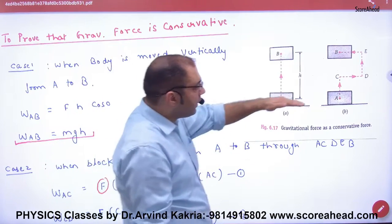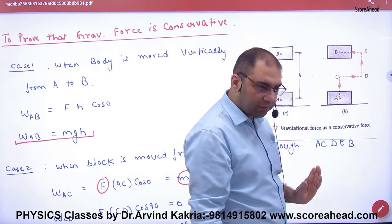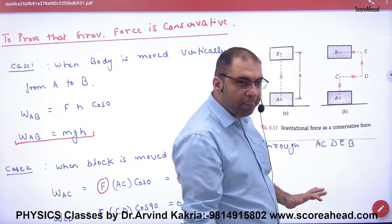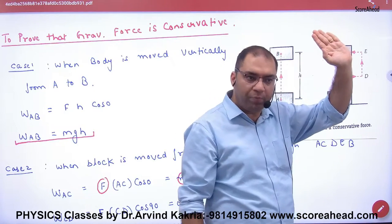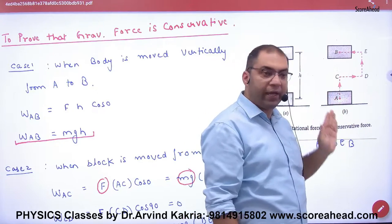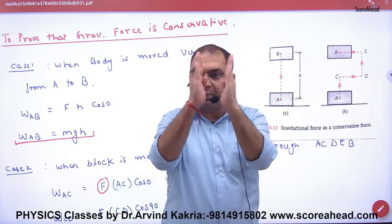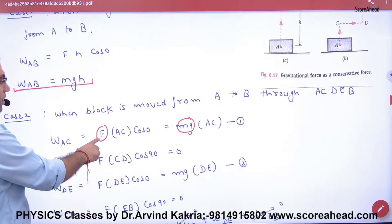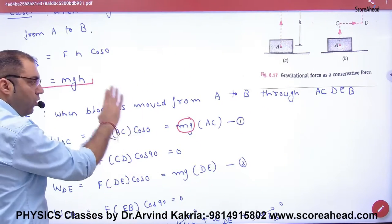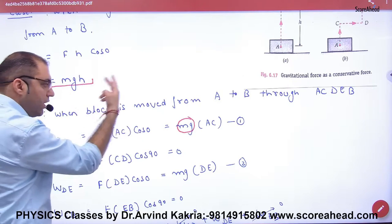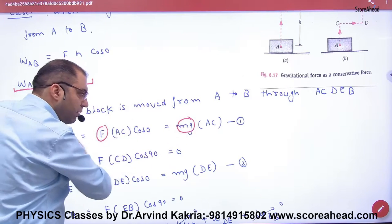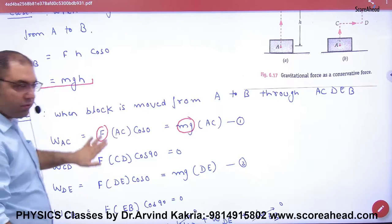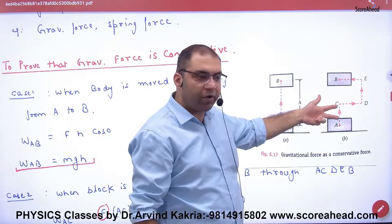Point number two: now I will take the path A, C, D, E, B. When I take A from C, the force is mg and displacement is AC, with angle 0. So the work done from A to C is mg into AC. Similarly, the work done from D to E is mg into ED.